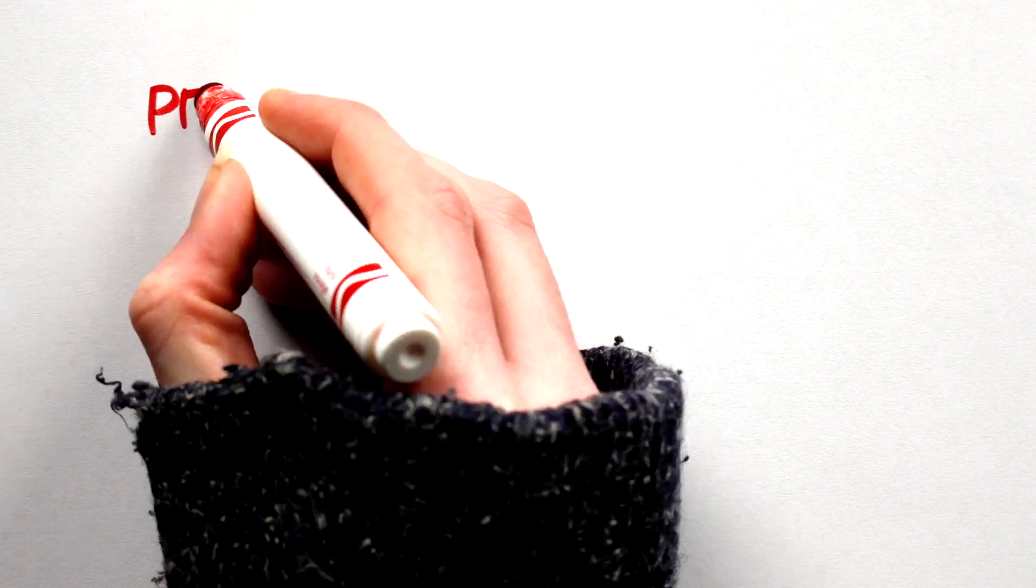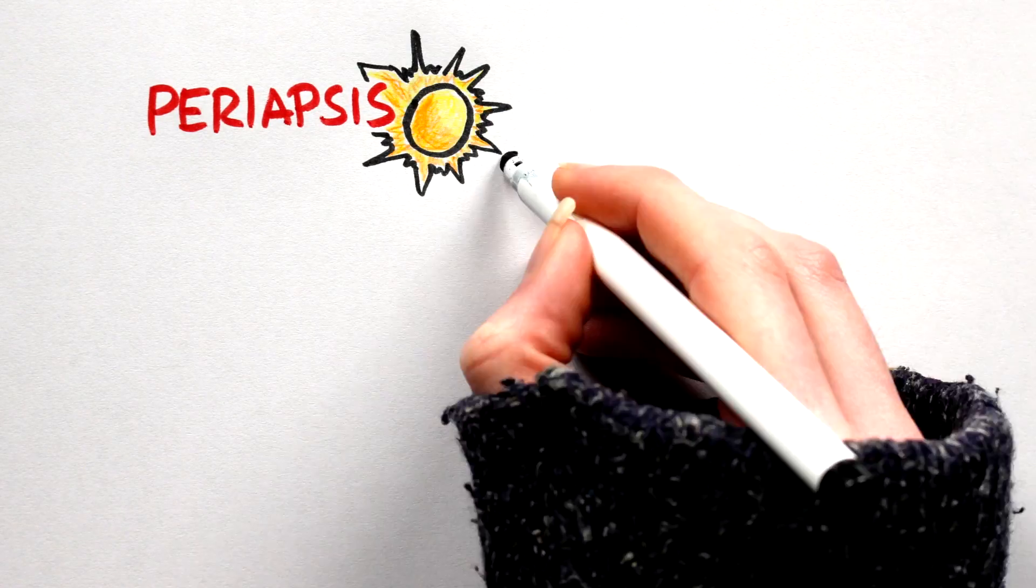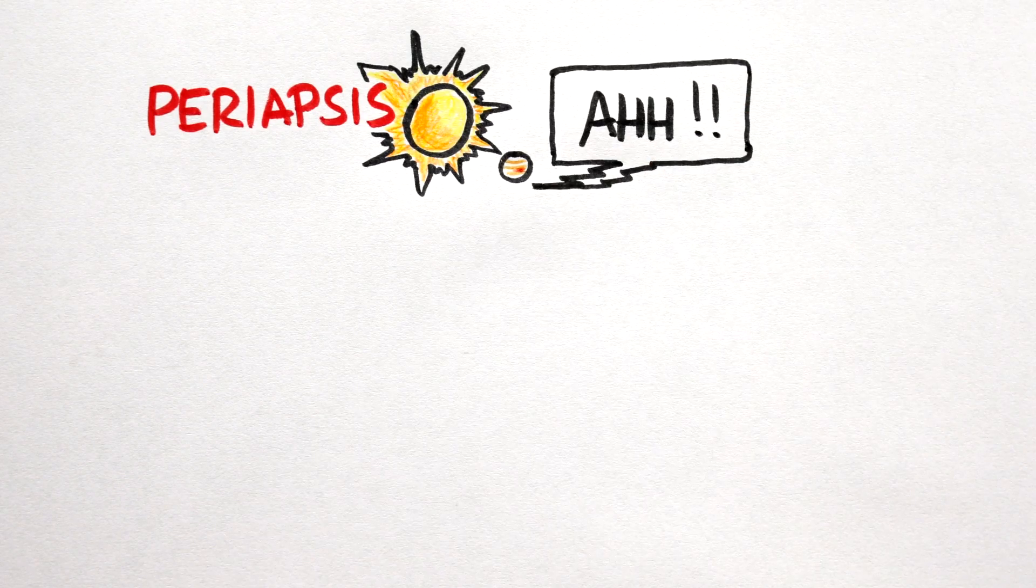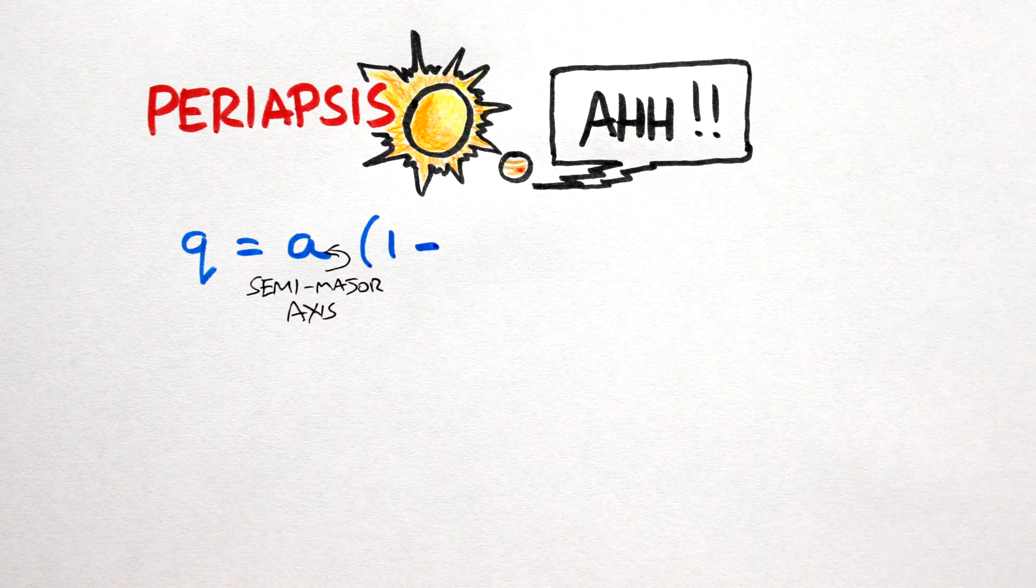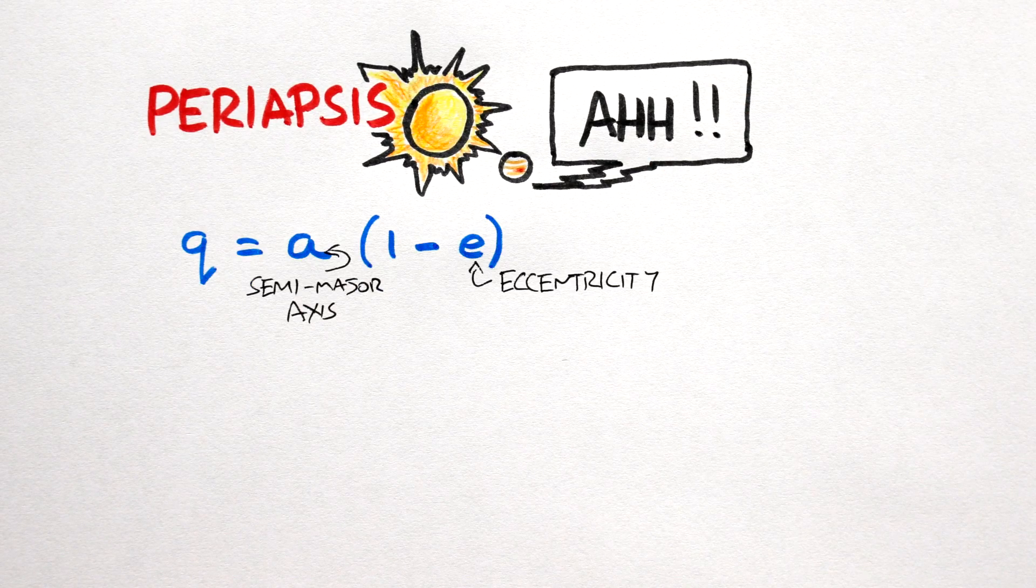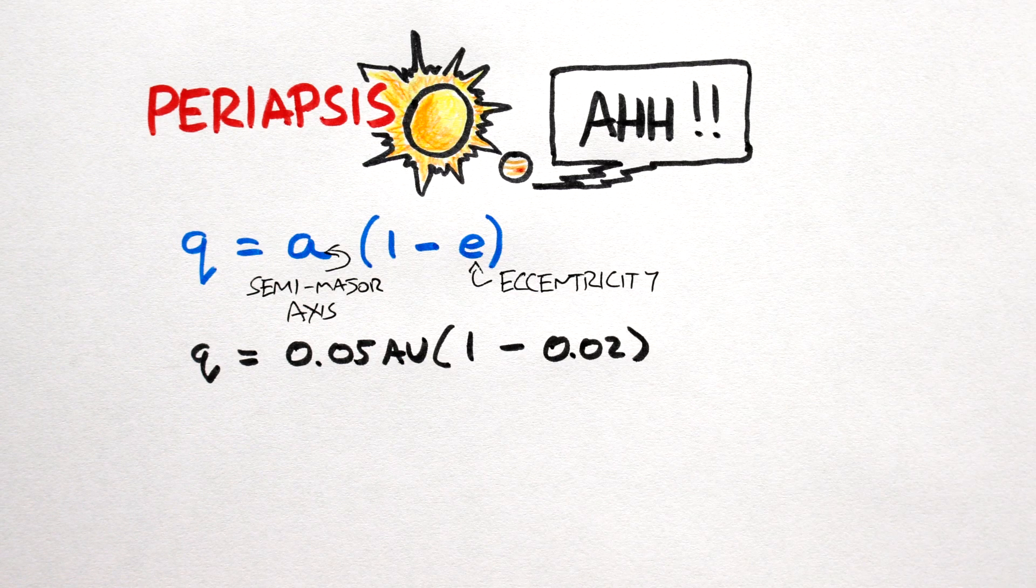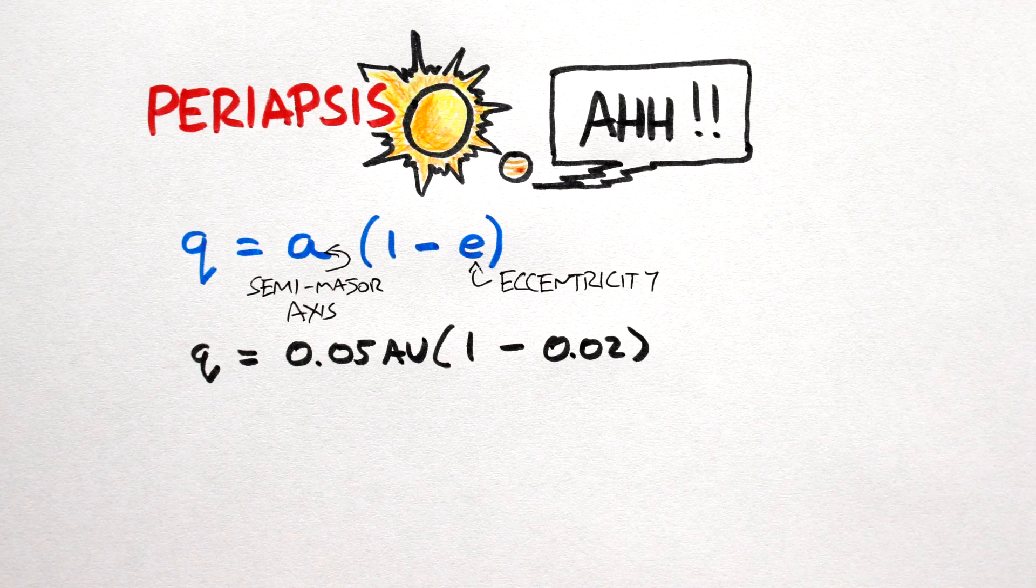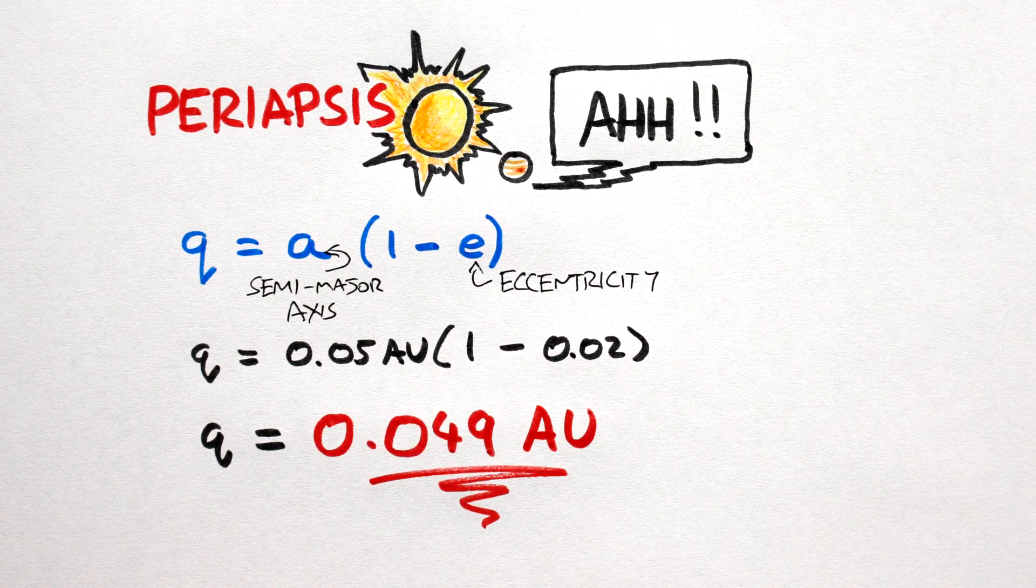Periapsis. The periapsis, the point at which our hot Jupiter will be closest to its star, is given by A, the semi-major axis, multiplied by 1 minus the eccentricity. So in this case, 0.05 AU multiplied by 1 minus 0.02, giving us a periapsis at 0.049 AU.